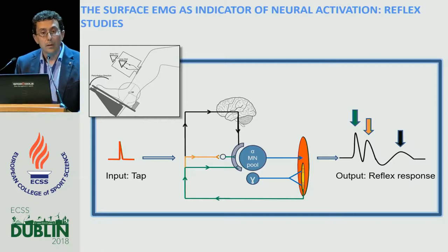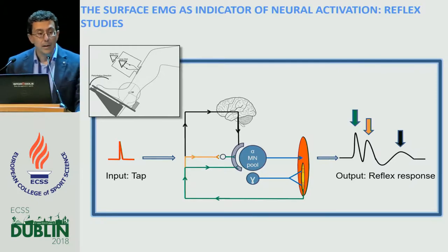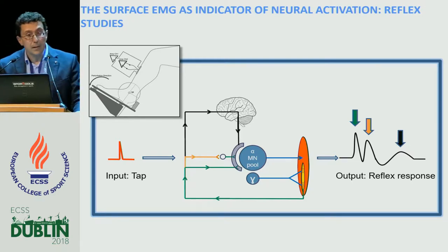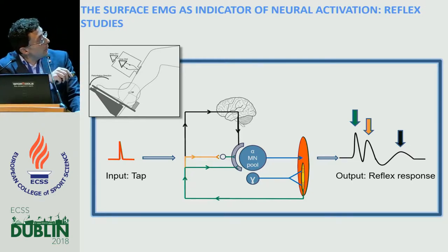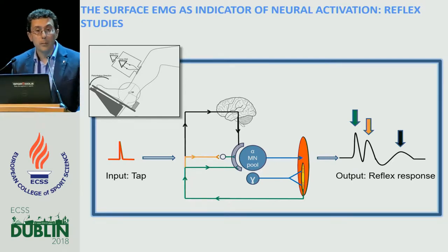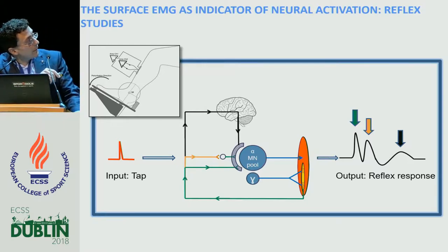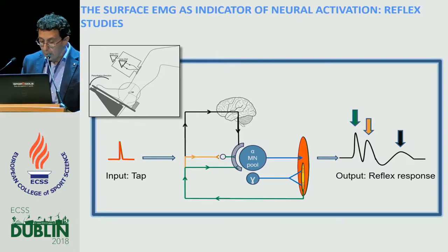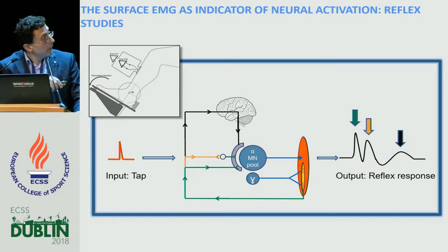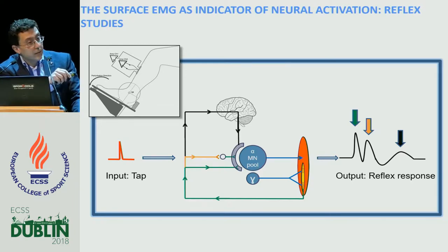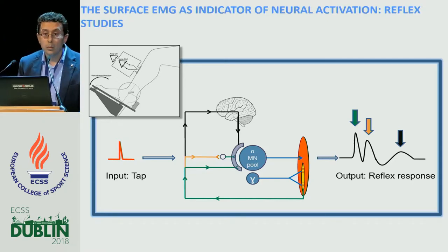The example comes from the field of reflex studies in humans. This implies soliciting afferents in the muscle — for example, with electrical or mechanical stimulation — and this afferent input will reach the motor neuron pool, will also go to the supraspinal level, and ultimately will determine a muscle activation, which is a reflex activation. This reflex activation can be investigated by recording the electrical activity with EMG of the muscle. We use the EMG amplitude to assess periods of inhibition and excitation, associating peaks and valleys to inhibitory and excitatory pathways.